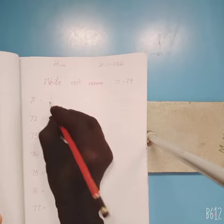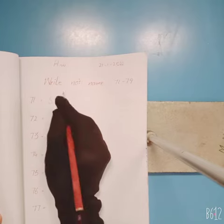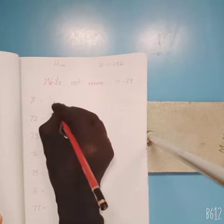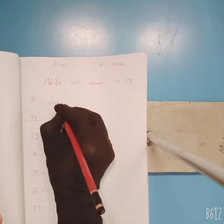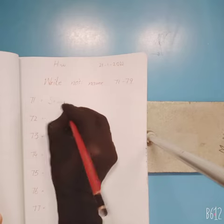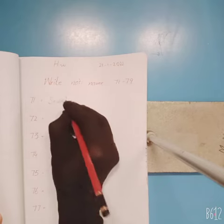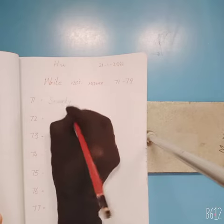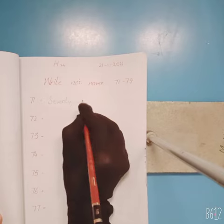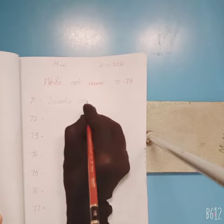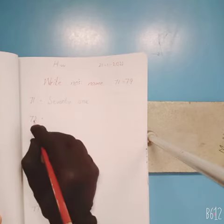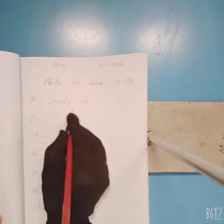Remember, the first letter is always capital. Now 71: S-E-V-E-N-T-Y, seventy, O-N-E, one — seventy-one, 71.